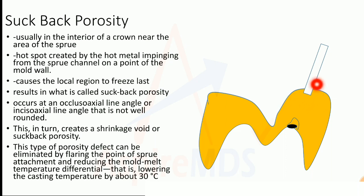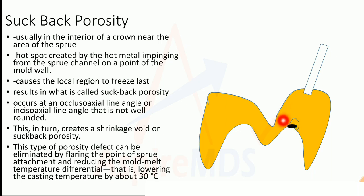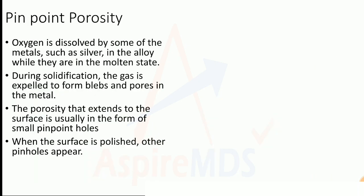Suck back porosity can also be reduced by lowering the casting temperature by about 30 degrees Celsius, reducing the mold-melt temperature differential.